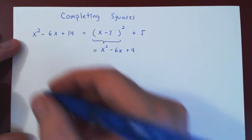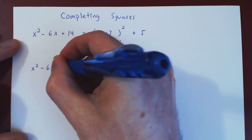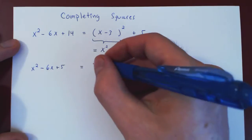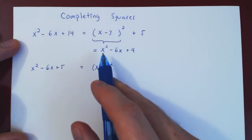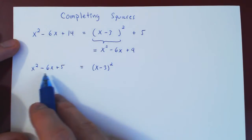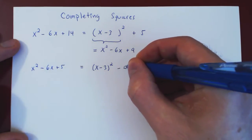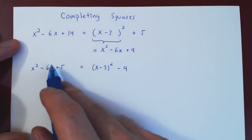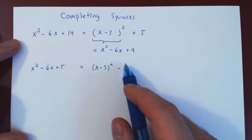What if we had x squared minus 6x plus 5? We'll have the same x minus 3 squared. Expanding gives x squared minus 6x plus 9. What do we add to 9 to get to 5? Of course it is negative 4. Once again we have eliminated the linear factor; all we have is something squared plus negative 4.